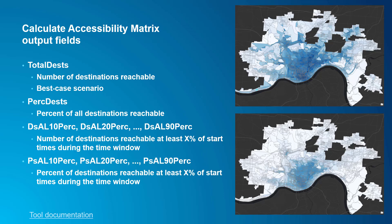Those two fields summarize the entire time window and don't account for differences in how many opportunities there are to reach different destinations. The origin can reach 10 different destinations, but because of the transit schedule, maybe one of those is only barely reachable — if the traveler times it just right, they can get there with only a few seconds to spare before the travel time limit is exceeded. However, another one of the 10 reachable destinations is right next door, and the traveler can easily reach it no matter what time of day. This is where the other fields come in.